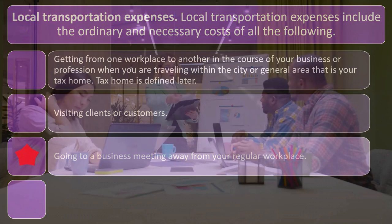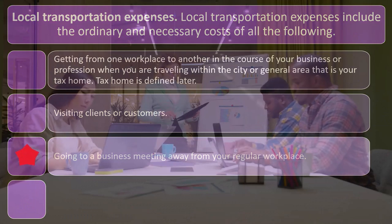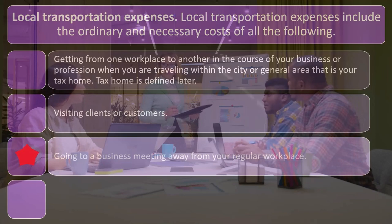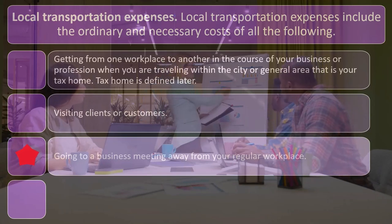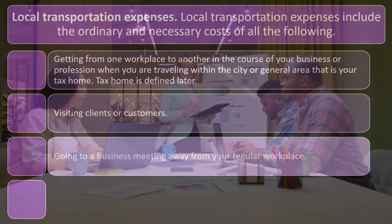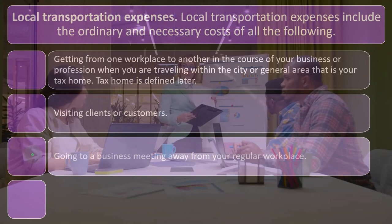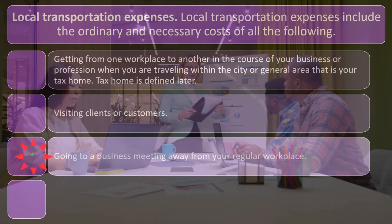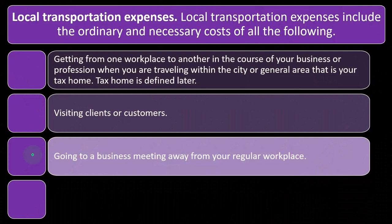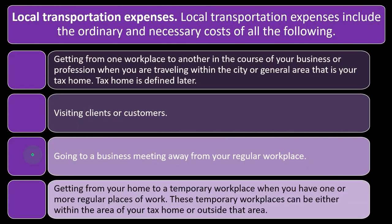Going to a business meeting away from your regular workplace — so you have your regular workplace, and you might have a home office, for example. But if you're working someplace other than your home office, and that's your primary place of work, the commute to that office would be a commuting situation. But if you're going to another meeting that's not to that office, then that would be a local transportation expense where you'd be tracking the miles.